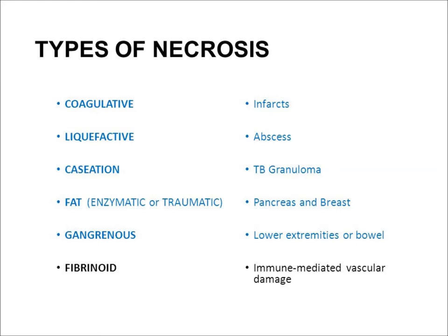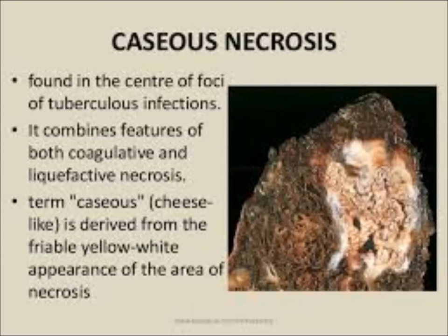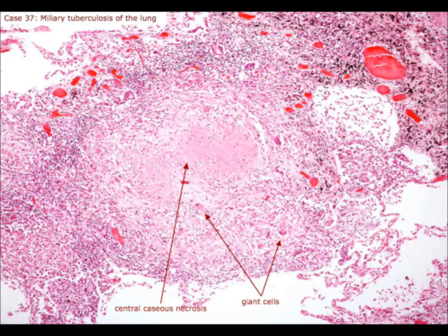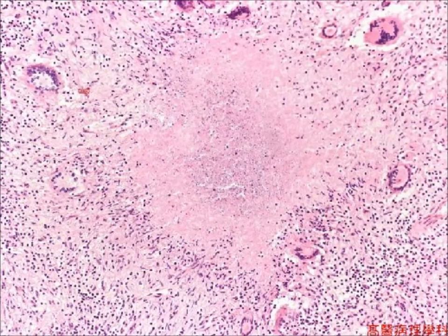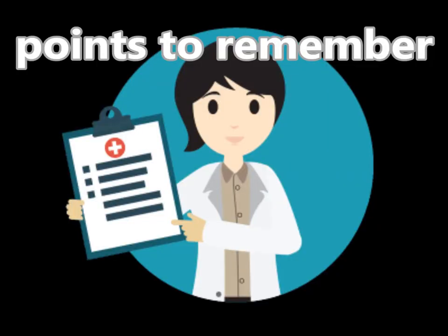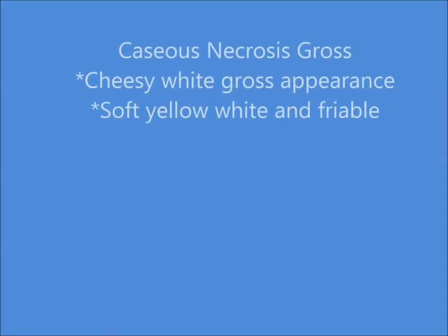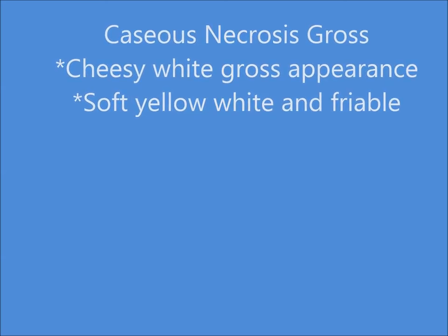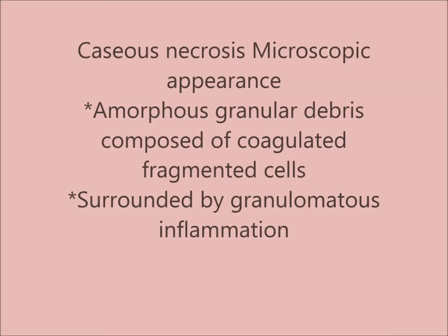Caseous necrosis is a descriptive term because it resembles cheese-like material — friable and soft grossly. It is caused by Mycobacterium tuberculosis infection. Microscopically, there is acellular necrotic material in the center surrounded by granulomatous inflammation. The granuloma is composed of epithelioid cells, giant cells, and a collar of lymphocytes. Grossly it is yellow-white, soft, and friable; microscopically there is amorphous granular debris in the center.